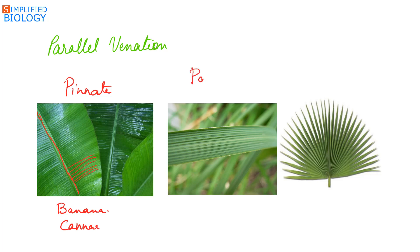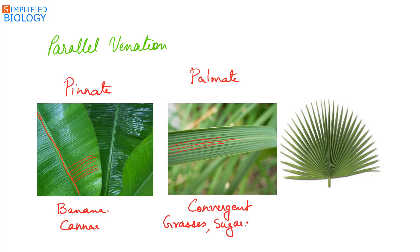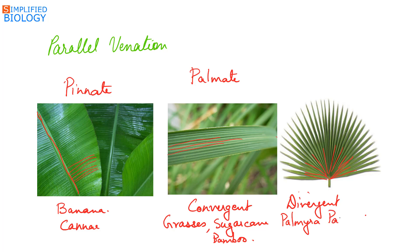Palmate convergent means there are many main veins formed from the base of the lamina that converge at the leaf apex. Examples: grasses, sugarcane, bamboo. Palmate divergent means there are many main veins arising from the base of the lamina diverging in all directions. This is seen in case of Palmyra palm, also known as fan palm.